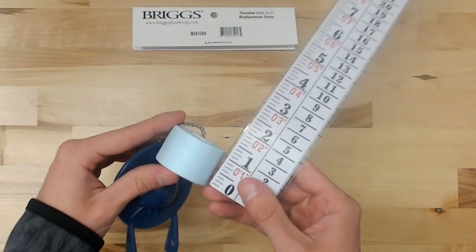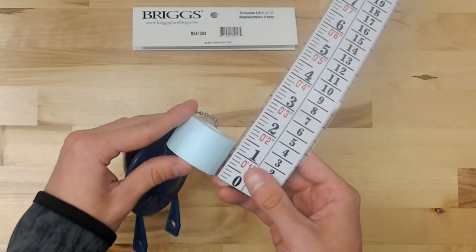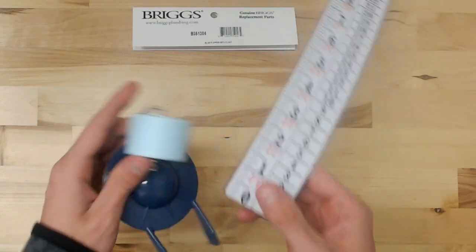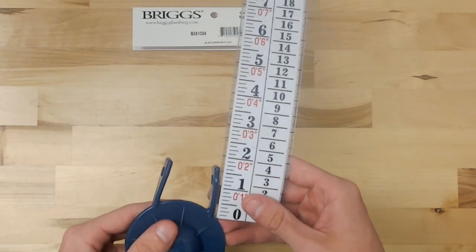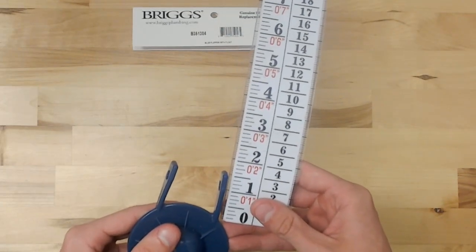We'll do the height of the float. About an inch and a quarter. And then the ears, about an inch and a half.